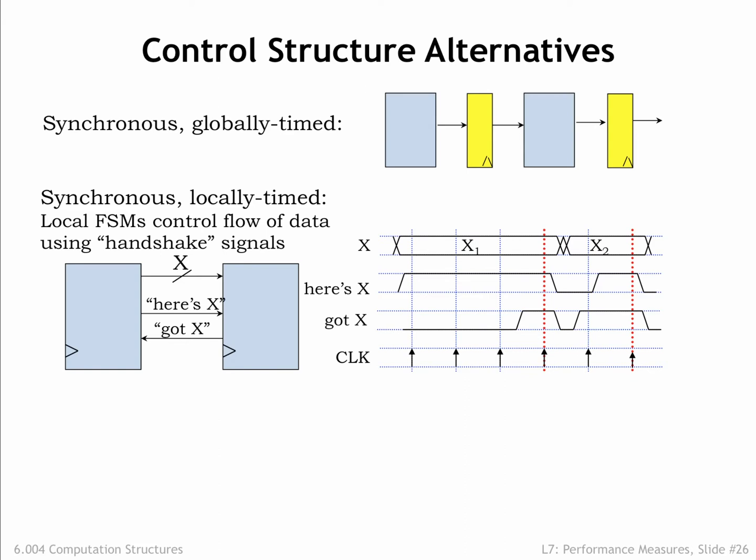The handshake protocol works as follows. The upstream stage asserts here's X if it will have a new output value available at the next rising edge of the clock. The downstream stage asserts got X if it will grab the next output at the rising edge of the clock. Both stages look at the signals on the rising edge of the clock to decide what to do next.